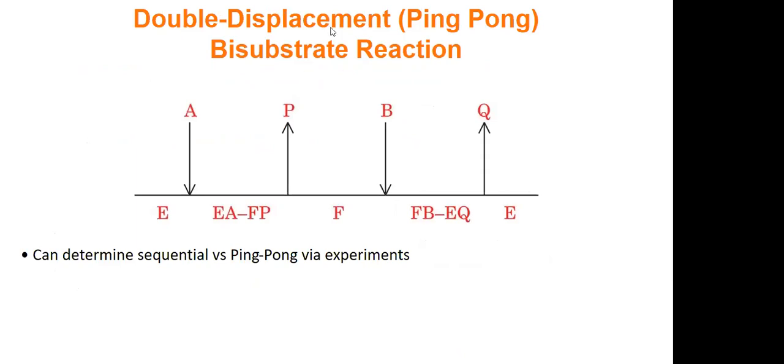And compare that with ping pong or called double displacement. So these names are easy. Ping pong is substrate binds, product comes off. Substrate binds, product comes off. So ping pong, ping pong, substrate product, substrate product. And the way to determine a sequential versus ping pong mechanism is that you have to do experiments. So you can do some kinetic experiments and just see what is my enzyme doing? Is it doing a sequential mechanism or is it doing a ping pong mechanism?